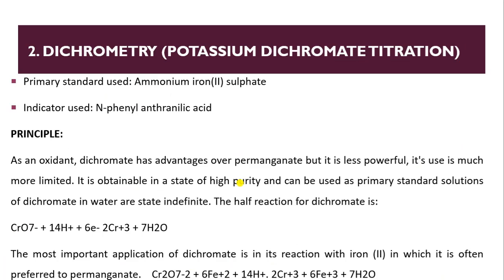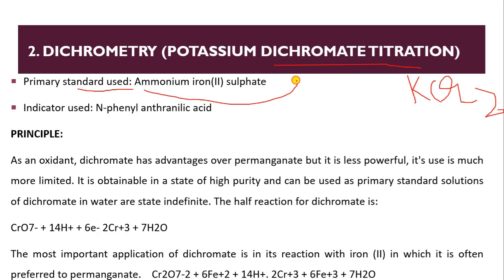Now we will see the other method: dichromatometry. The titrant here is potassium dichromate (K₂Cr₂O₇). The primary standard used here is ammonium iron sulfate. An indicator used in this method is N-phenyl anthranilic acid. As an oxidant, dichromate has advantages over permanganate but is less powerful, so it is used in more limited applications. It is obtainable in a state of high purity and can be used as a primary standard.